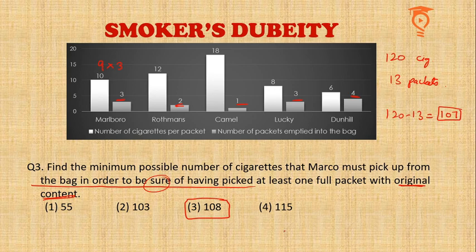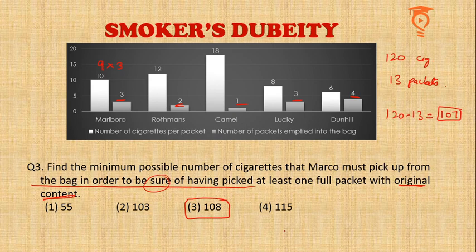At 108 cigarettes, we are 100 percent sure that at least one complete packet has been picked, even if not all. The best possible case would have been the first 6 cigarettes all belonging to the first Dunhill packet, but we can't be sure of that. At 108, we are certain.